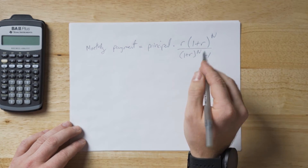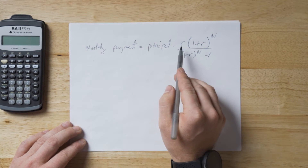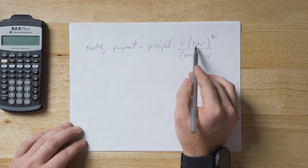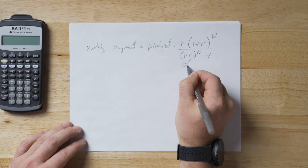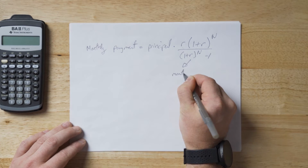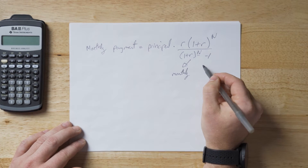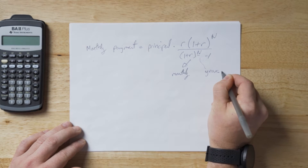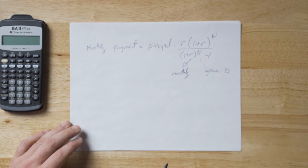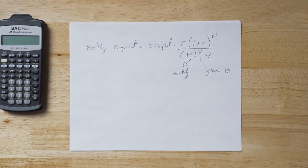A thing to note is that this is a monthly payment, so the interest rate here will be a monthly interest rate, and the number of periods will be your number of years multiplied by 12, because you have 12 periods per year. You could calculate this with just a piece of paper and a basic calculator.